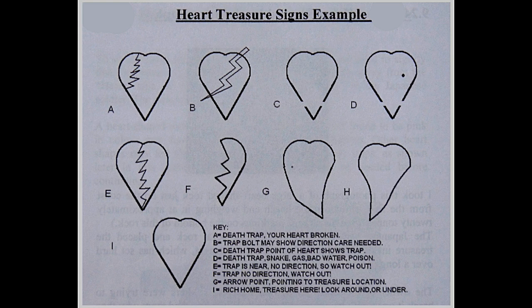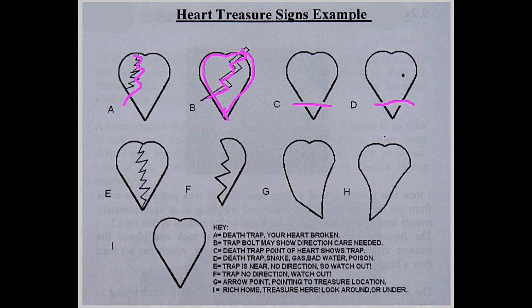Before we continue, let's have lesson 101 about meaning of hearts, different forms of hearts. Let's start with letter A. If there's a broken heart like this, that is a dangerous heart symbol. It has a death trap. Even though there's treasure, it's dangerous. It's either a water trap or a vintage bomb.